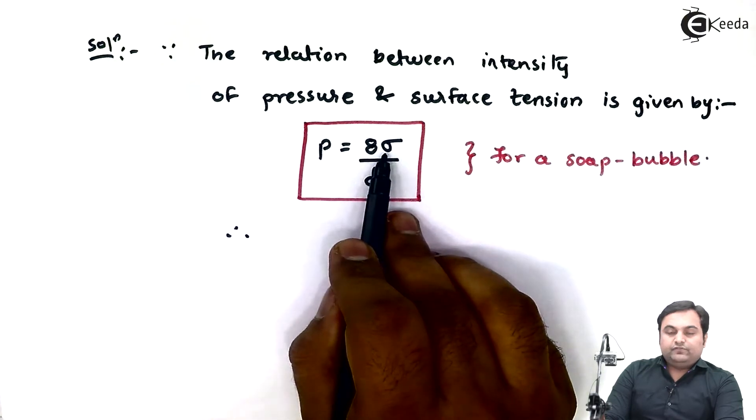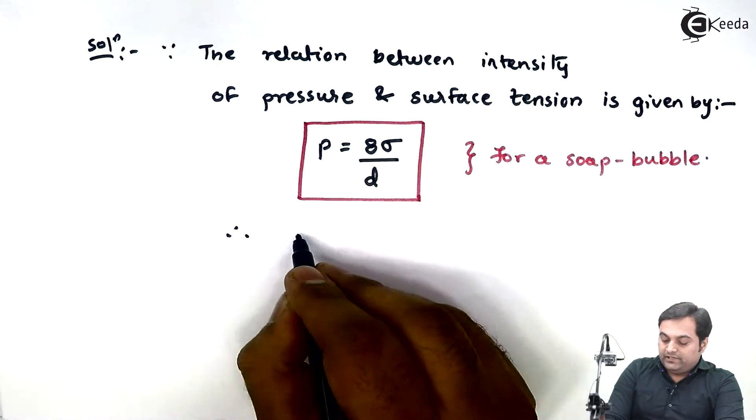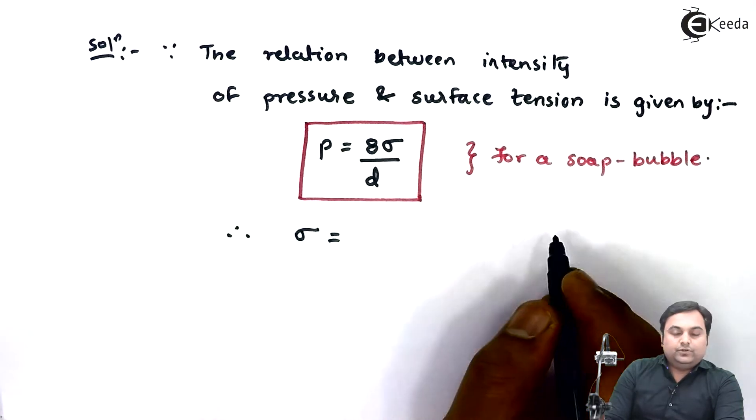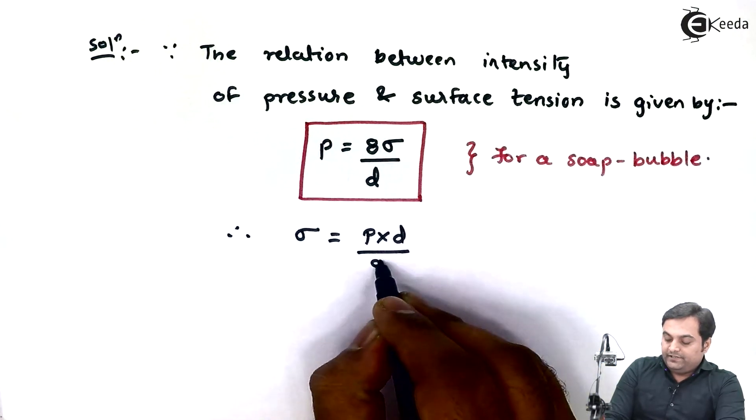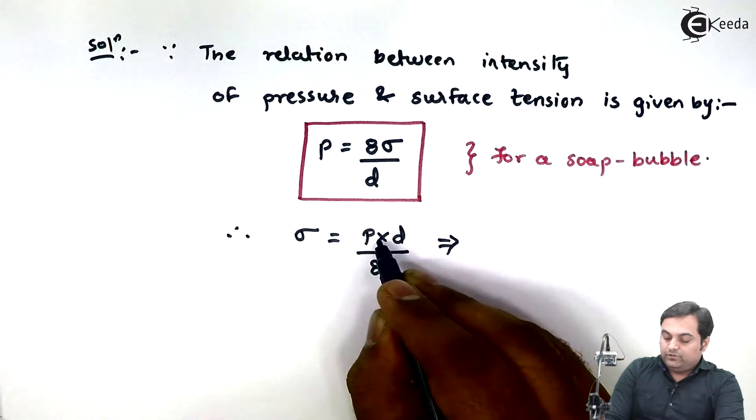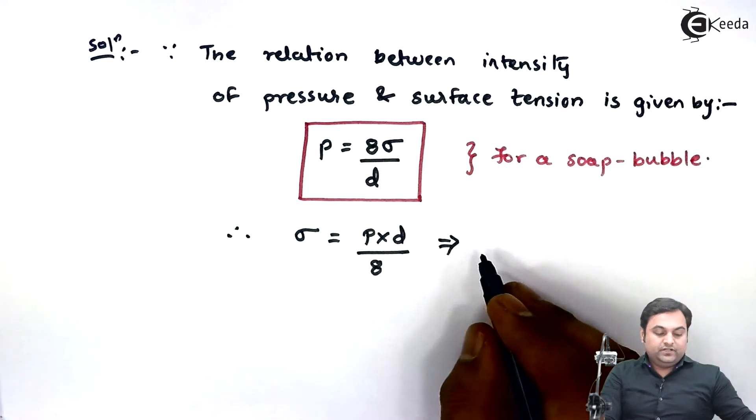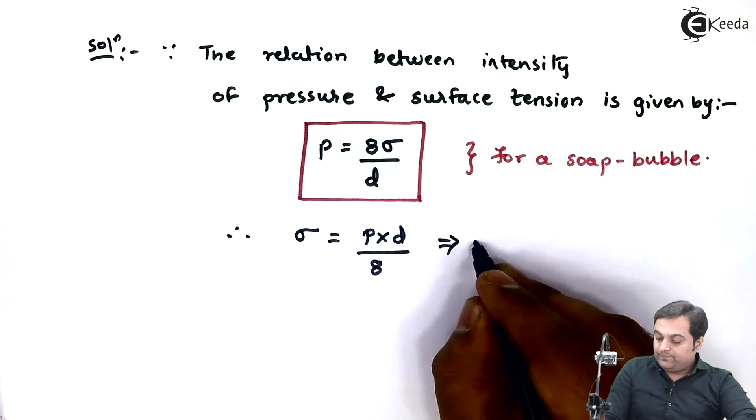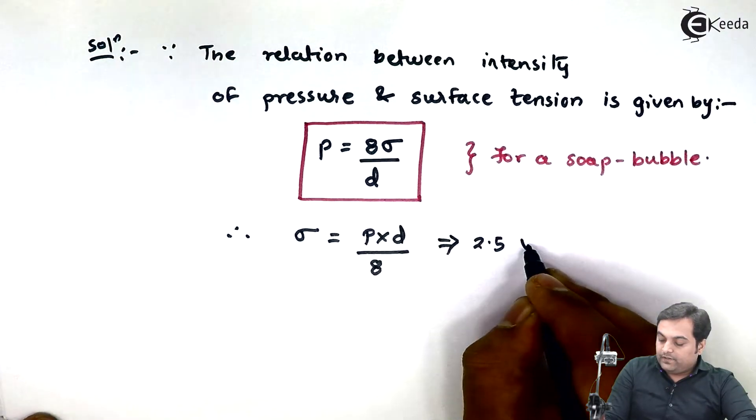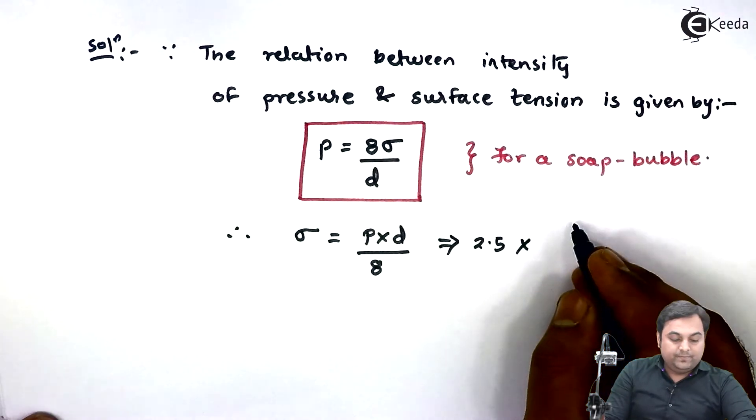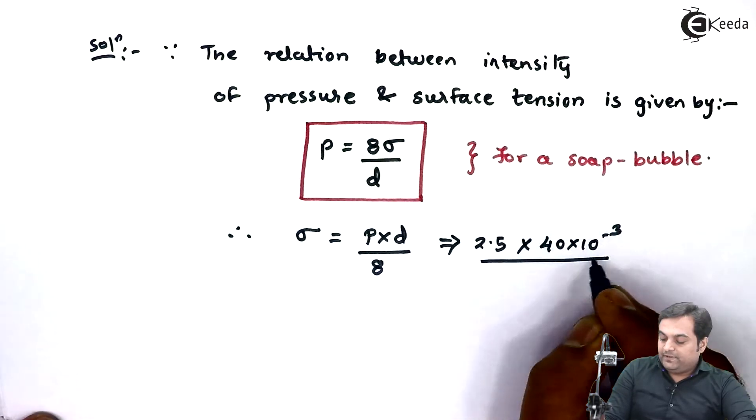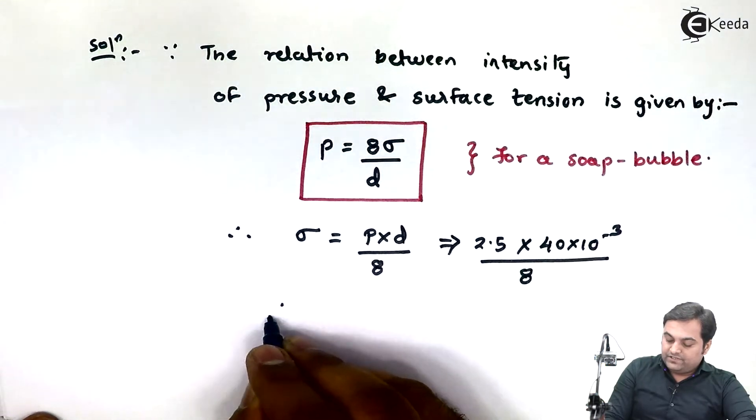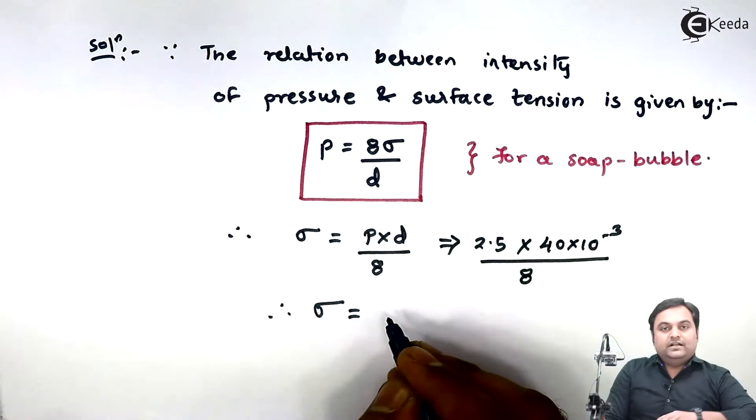We have to calculate surface tension, so I'll write σ = Pd/8. It is equal to the intensity of pressure, which is 2.5, times the diameter of the soap bubble, which is 40 × 10^-3, divided by 8. From this calculation, my answer for σ comes out to be